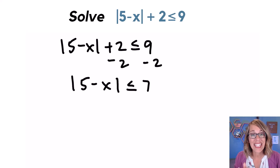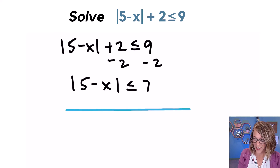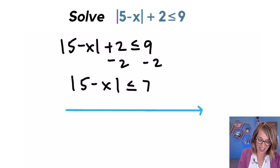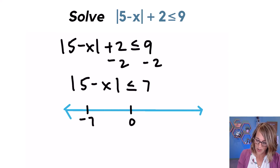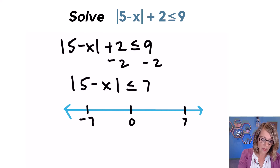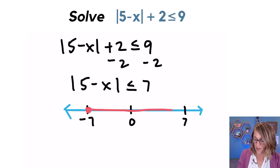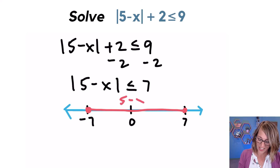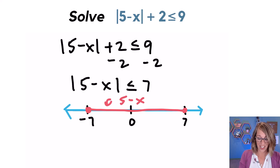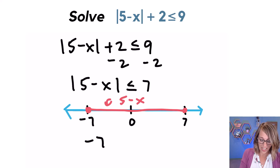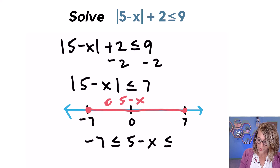Now let's interpret this as a distance using our number line. I could be at seven away from zero — I'll put zero there — or negative seven, or anywhere in between. I'm going to use closed circles all the way across. That's where my five minus x can live. So the inequality I end up with is: negative seven is less than or equal to five minus x, which is less than or equal to seven.